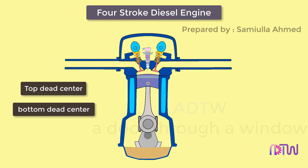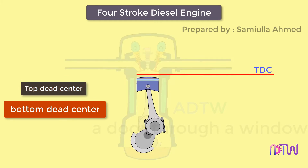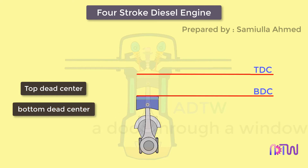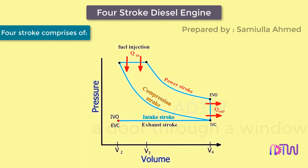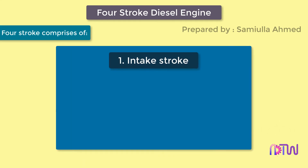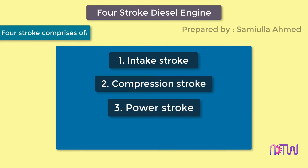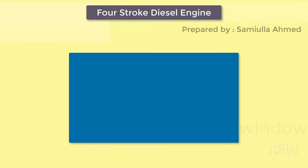Before explaining the four strokes, we need to know what top dead center and bottom dead center are. Top dead center is the topmost position of the piston inside the cylinder, and bottom dead center is the bottommost position of the piston inside the cylinder. The four-stroke diesel engine works on the principle of the diesel cycle. The four strokes are: first, the intake stroke; second, the compression stroke; third, the power stroke; and fourth, the exhaust stroke.